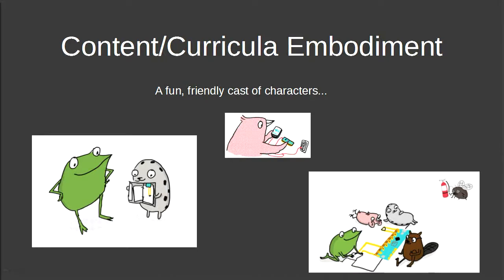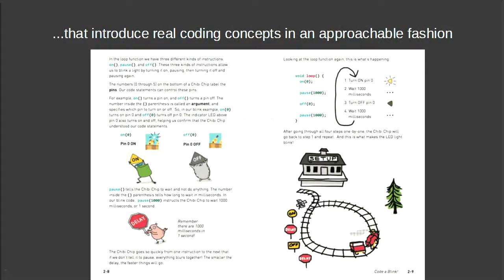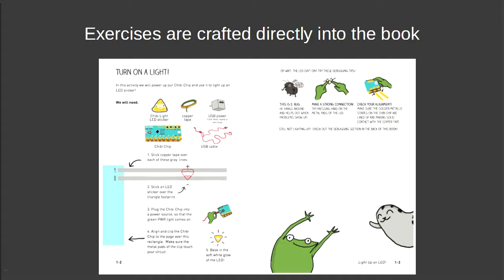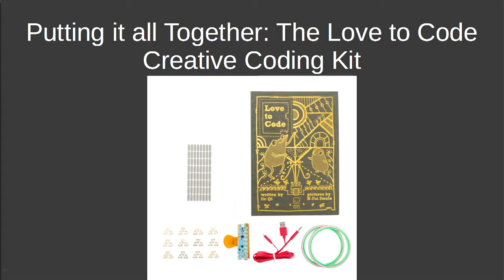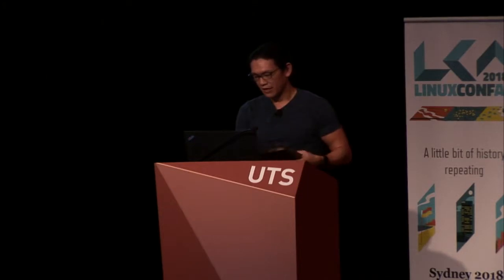In addition to physical embodiment, we needed a curriculum embodiment. To make it approachable, we started with a fun, friendly cast of characters to walk you through getting into technology, introducing real coding concepts in an approachable fashion — teaching logic, on/off, loops, using analogies so code doesn't seem scary. All you have to know is where the curly braces and semicolons are. We have exercises crafted directly into the book: lay down copper tape, put on an LED, clip on the microcontroller, and complete your exercise.